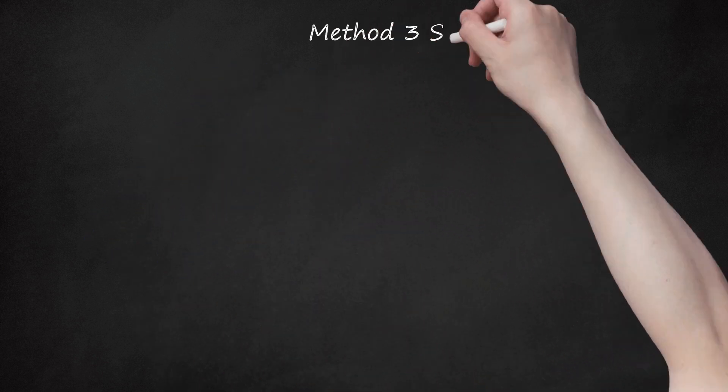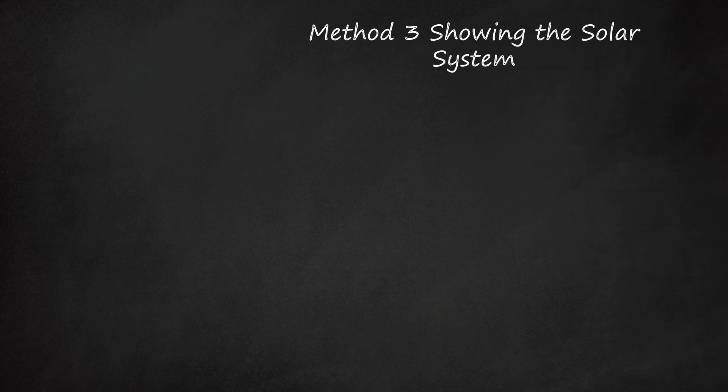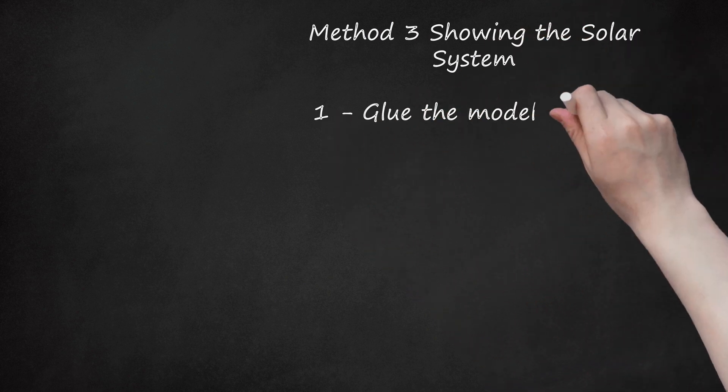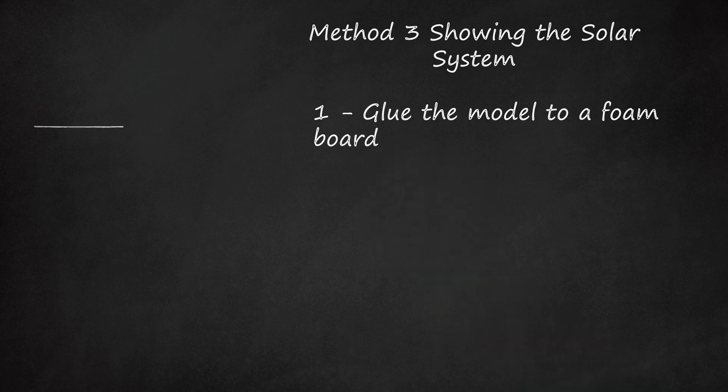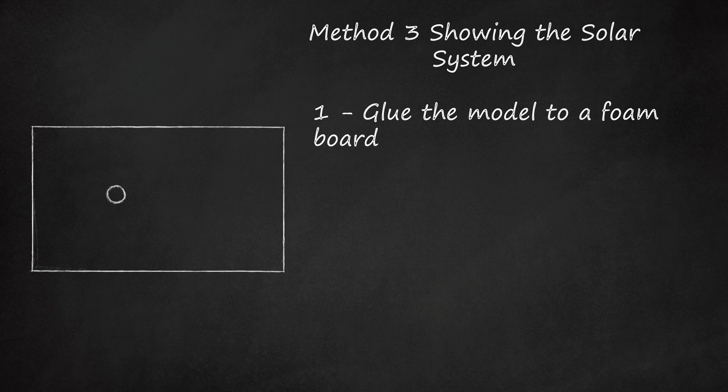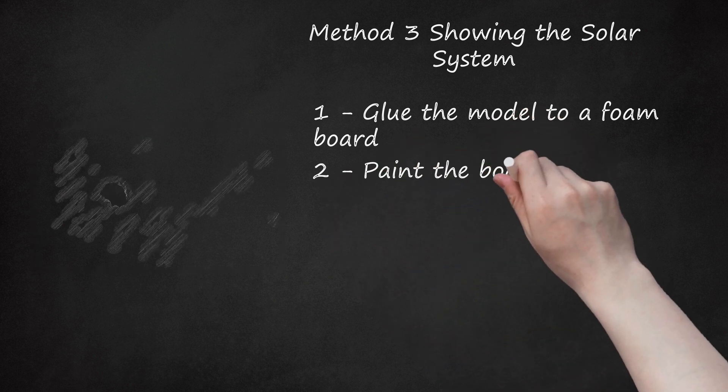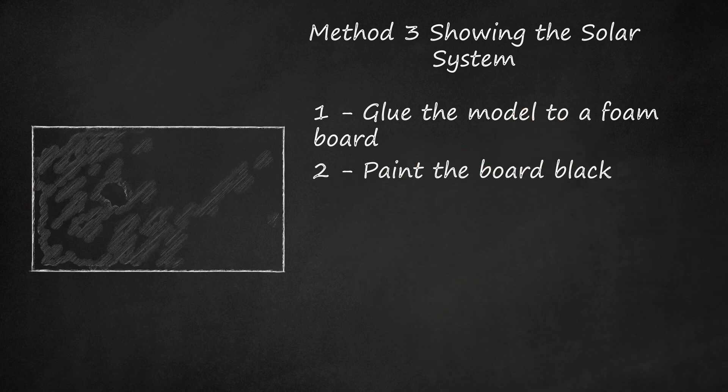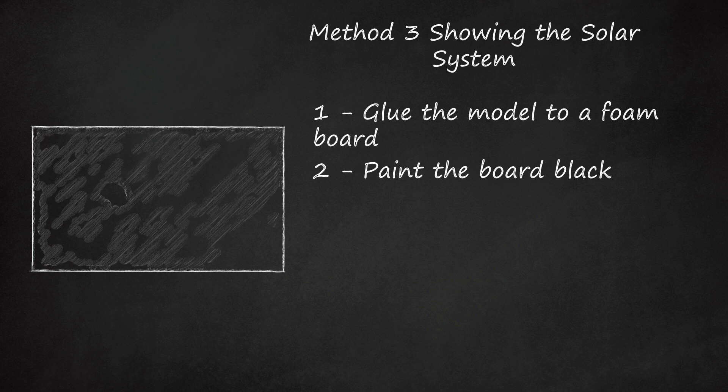Method 3: Showing the Solar System. Step 1: Glue the model to a foam board. Make one of the two models described above. Once you're finished, glue it to a large piece of foam board or cardboard. Step 2: Paint the board black. Color the foam board black to show outer space.